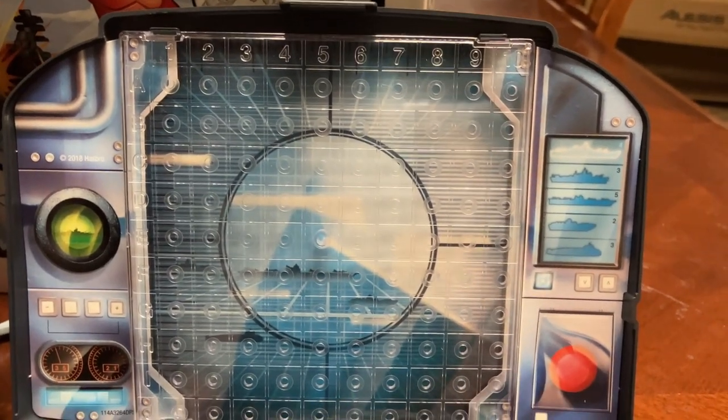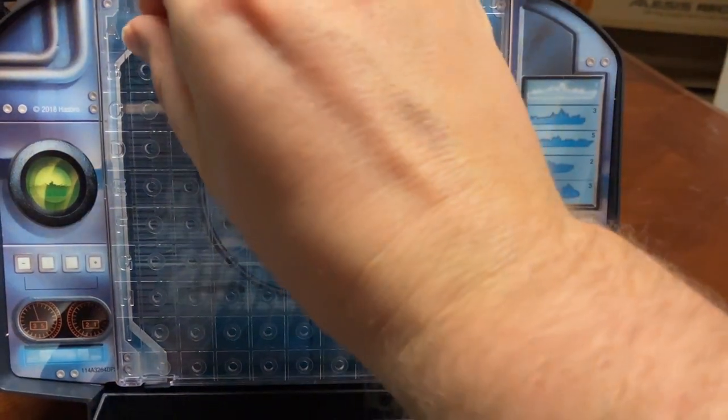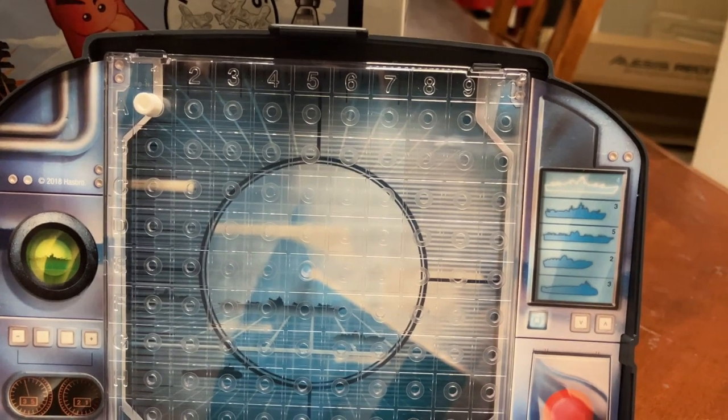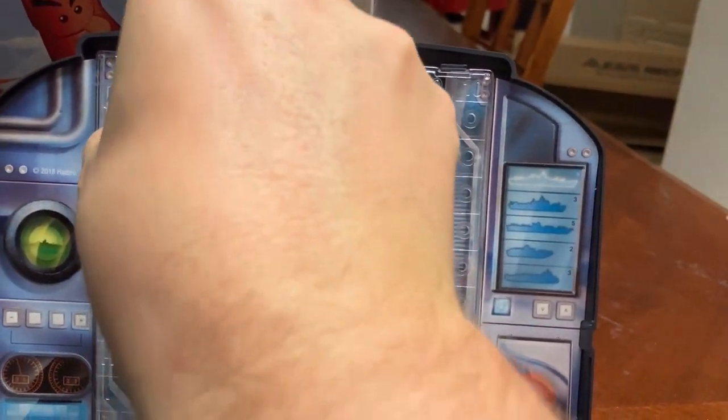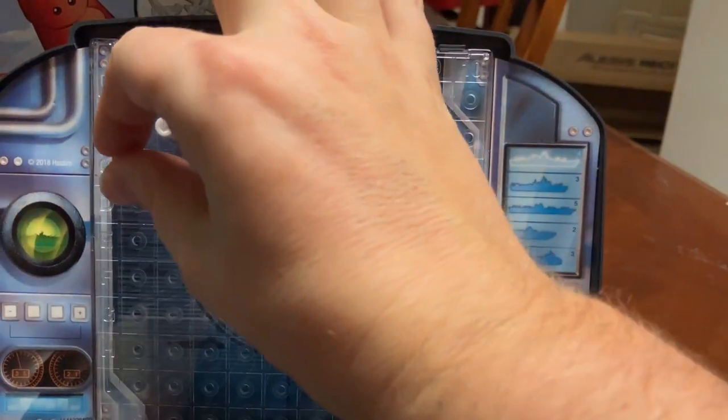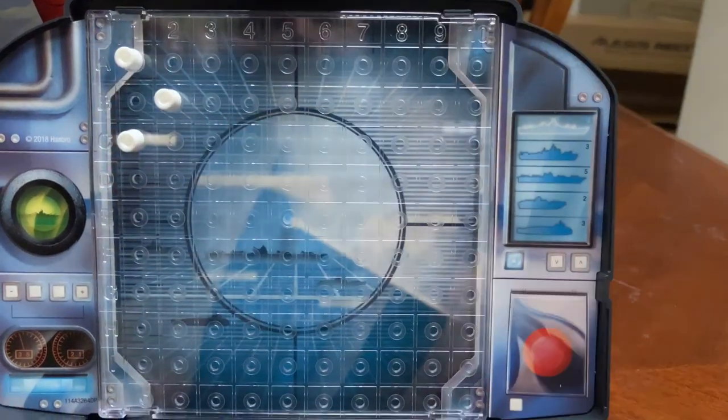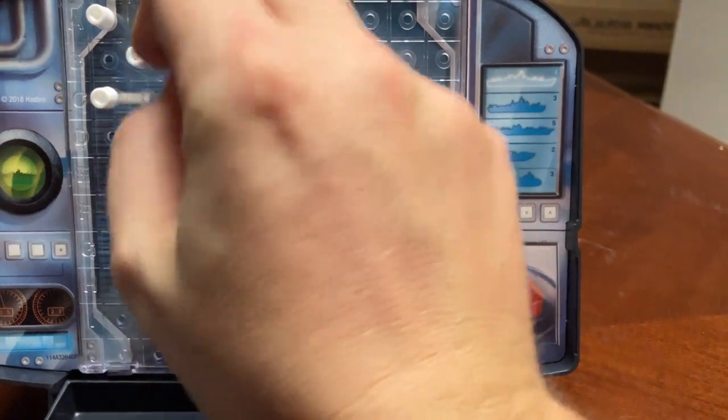So what would I do? So a few ways that you could do this if you want to start just 1A that could be your first hit. Oh I missed. Okay next time I would go to B and then continue down the line 1C, 2D and so on.